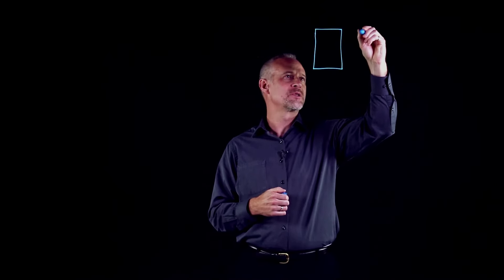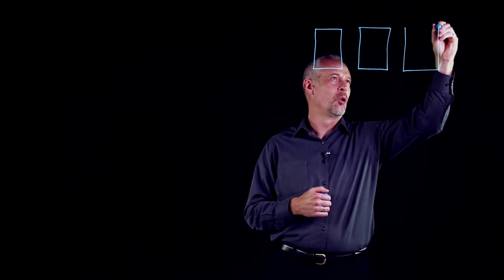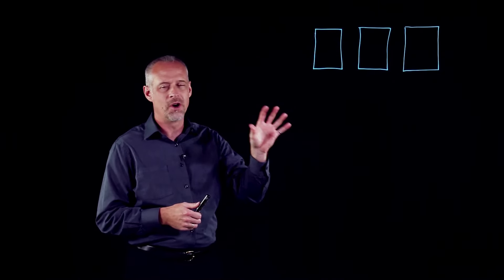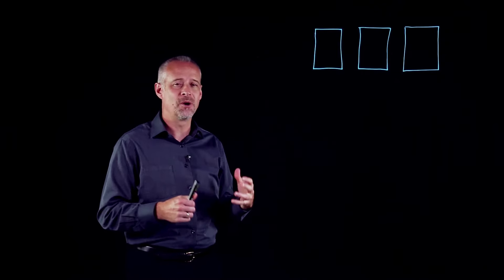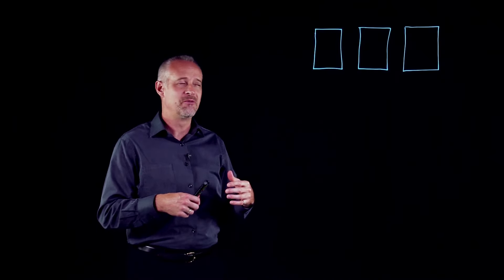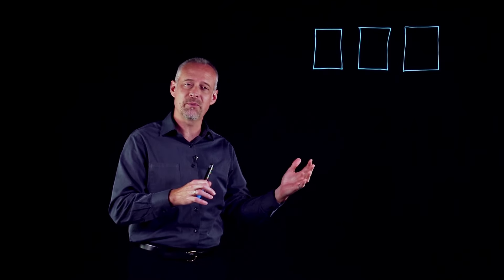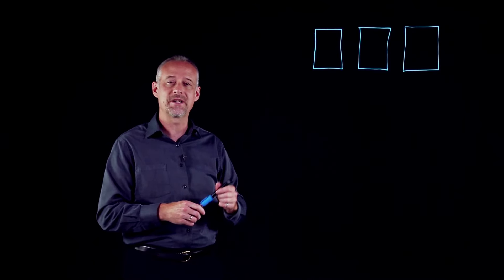This problem comes up in one particular part of the show. The host, Monty Hall, would present the contestant with three doors. He would say there is a prize behind one of the doors, and the contestant has to pick a door. Now, Monty knows where the prize is, and after the contestant picks a door, he would then reveal one of the two doors that wasn't picked and say, oh, it's not here. And he would ask the contestant, would you like to change?